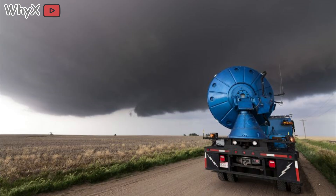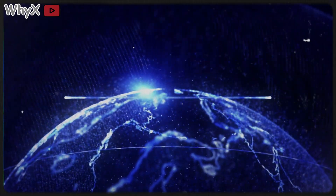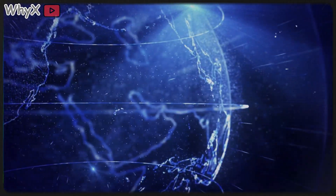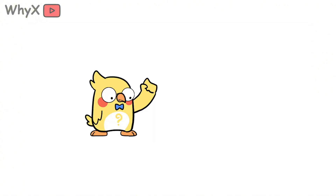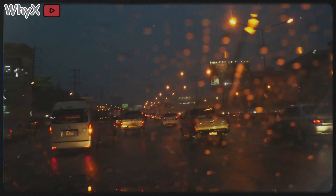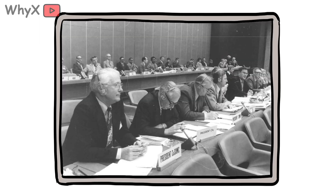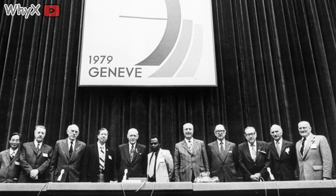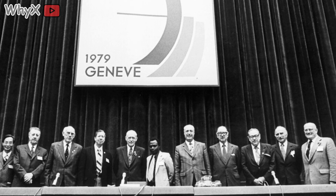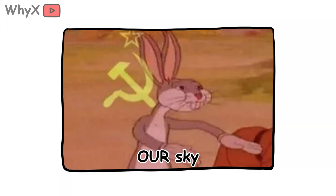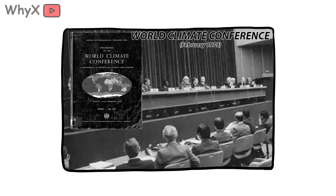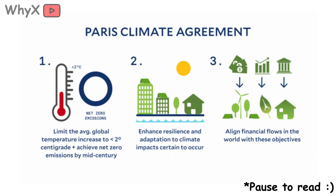Scientists often describe acid rain as the gateway problem — the moment the modern world realized the environment is one giant system, not a set of separate boxes. Before the 1970s, most people thought of pollution as local: smoke in your city, trash in your river. But acid rain proved that air is the world's bloodstream. What goes up in one country literally rains down on another. It shattered the illusion that nature could absorb anything we threw at it. This realization changed science and politics. International agreements started to form, like the 1979 Geneva Convention on Long-Range Transboundary Air Pollution. It was the first time nations said out loud: your sky is my sky too.